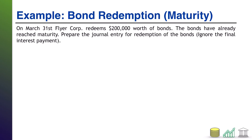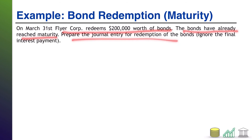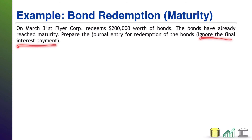Here we say on March 31st, Flyer Corps redeems $200,000 worth of bonds. The bonds have already reached maturity. Prepare the journal entry for redemption. I also note here — ignore the final interest payment. Remember, typically there is one last interest payment due on the same day that bonds are redeemed, but we're focusing simply on redemption, not interest.